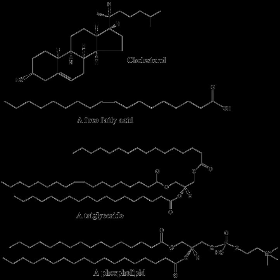Sterol lipids, such as cholesterol and its derivatives, are an important component of membrane lipids, along with the glycerophospholipids and sphingomyelins. The steroids, all derived from the same fused four-ring core structure, have different biological roles as hormones and signaling molecules. The 18-carbon steroids include the estrogen family whereas the C19 steroids comprise the androgens such as testosterone and androsterone. The C21 subclass includes the progestogens as well as the glucocorticoids and mineralocorticoids. The secosteroids, comprising various forms of vitamin D, are characterized by cleavage of the B-ring of the core structure. Other examples of sterols are the bile acids and their conjugates, which in mammals are oxidized derivatives of cholesterol and are synthesized in the liver. The plant equivalents are the phytosterols such as beta-sitosterol, stigmasterol, and brassicasterol. The latter compound is also used as a biomarker for algal growth. The predominant sterol in fungal cell membranes is ergosterol.